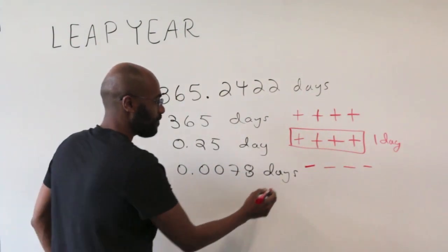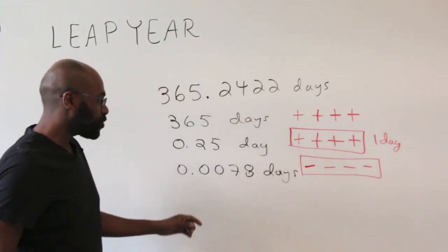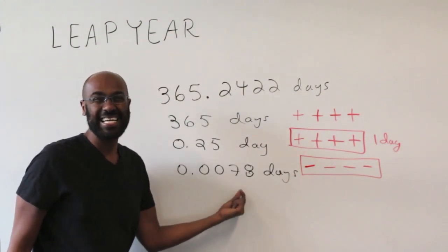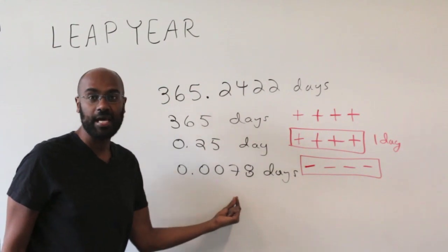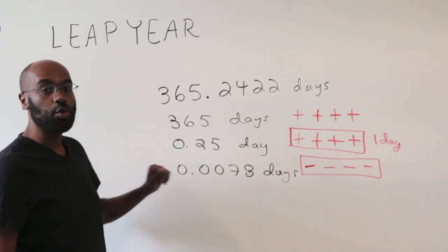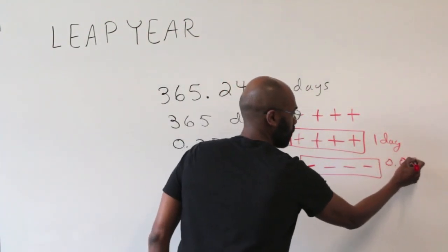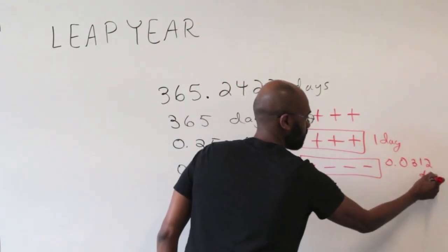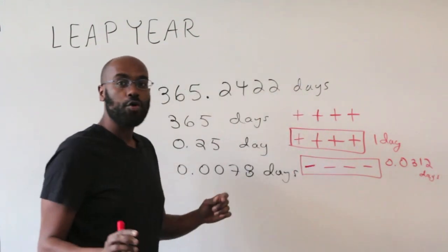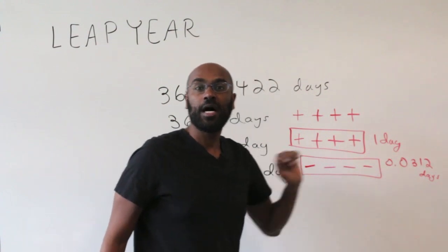However, we have this unfortunate situation right here where we actually lose this tiny, tiny fraction of a day every four years. The amount that we lose is four times this quantity right here, which works out to 0.0312 days. So every four years, we actually lose this tiny fraction of a day.